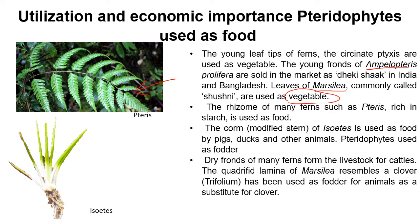The rhizome of many ferns like Pteris is rich in starch and is used as food. The corm, that is the modified stem of Isoetes, is used as food by pigs, ducks and other animals, so we can call that a fodder. The quadrifoliate leaf blade of Marsilia resembles a clover — Trifolium leaf — and has been used as fodder for animals as a substitute for clover, as it is very rich in nutrient content.